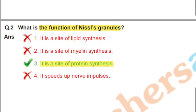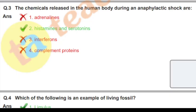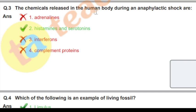Next question: the chemical released in the human body during an anaphylactic shock. What chemicals are released during anaphylactic shock? The answer is histamine and serotonin. These two are correct answers.